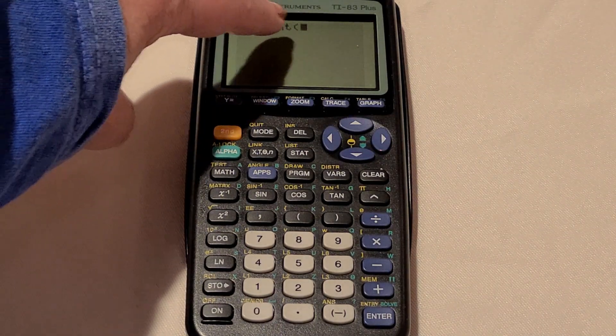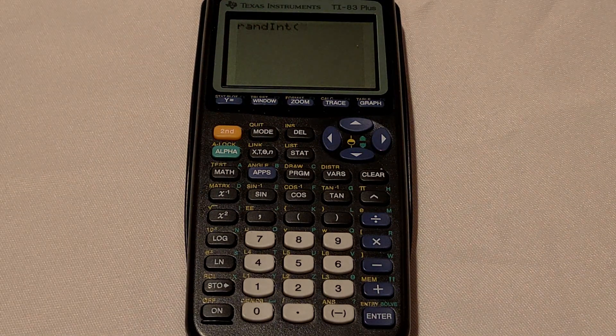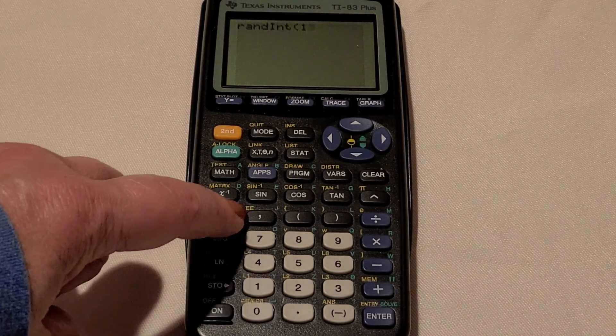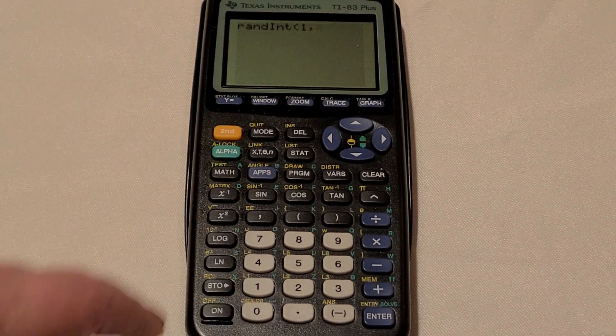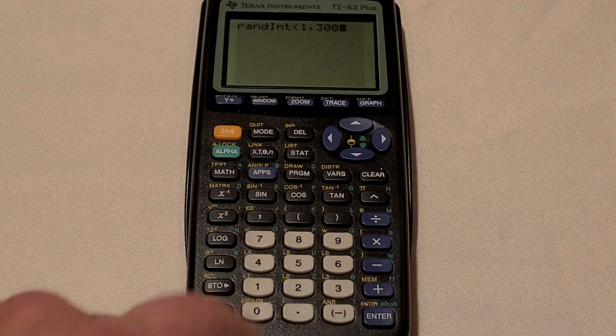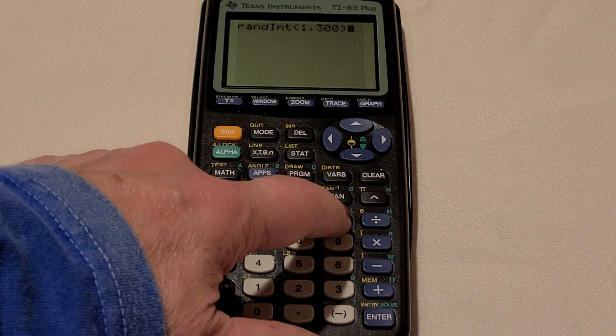But you can see our cursor is now on the right-hand side of that parentheses. We have ran int, open parentheses, and now we have the cursor. So now we can put in our lowest number, 1. Then we hit the comma, which is right here. And our greatest number, 300. And we can hit close parentheses right there.